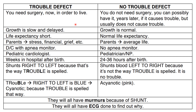With a 'trouble' defect, growth is slow and delayed. With a 'no trouble' defect, growth is normal. If you have a trouble defect, life expectancy is short. With a no trouble defect, life expectancy is normal.